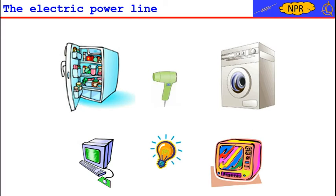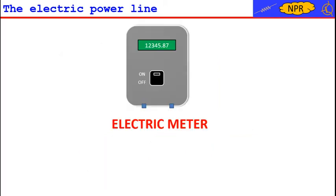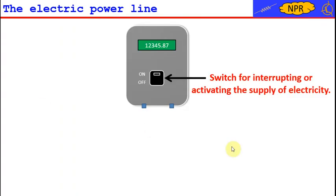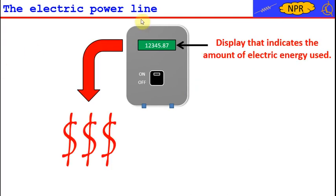But where does this precious resource come from? We know it well, it comes from the electric meter. When for some problem the main switch of our electric meter is off, we immediately realize how precious this resource is. The electric meter not only has the task of interrupting or activating the supply of electricity, but it also has the thankless task of measuring how much electric energy we use and consequently how much we will pay with the next bill.